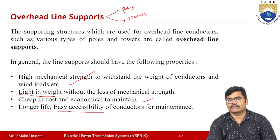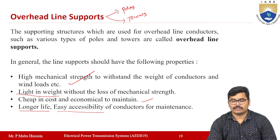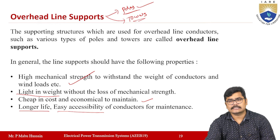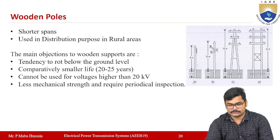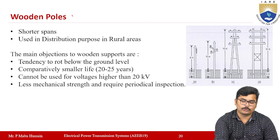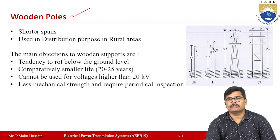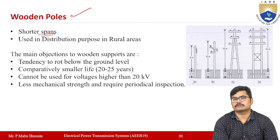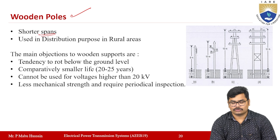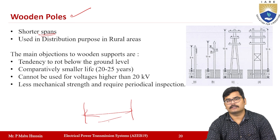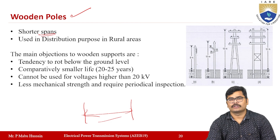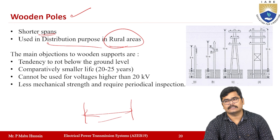Line supports must also have a longer life and allow easy accessibility of conductors for maintenance. Poles are generally used for low voltages and towers for high voltages. First, considering wooden poles — these are used for shorter spans and generally for distribution in rural areas. The span is the distance between any two poles.